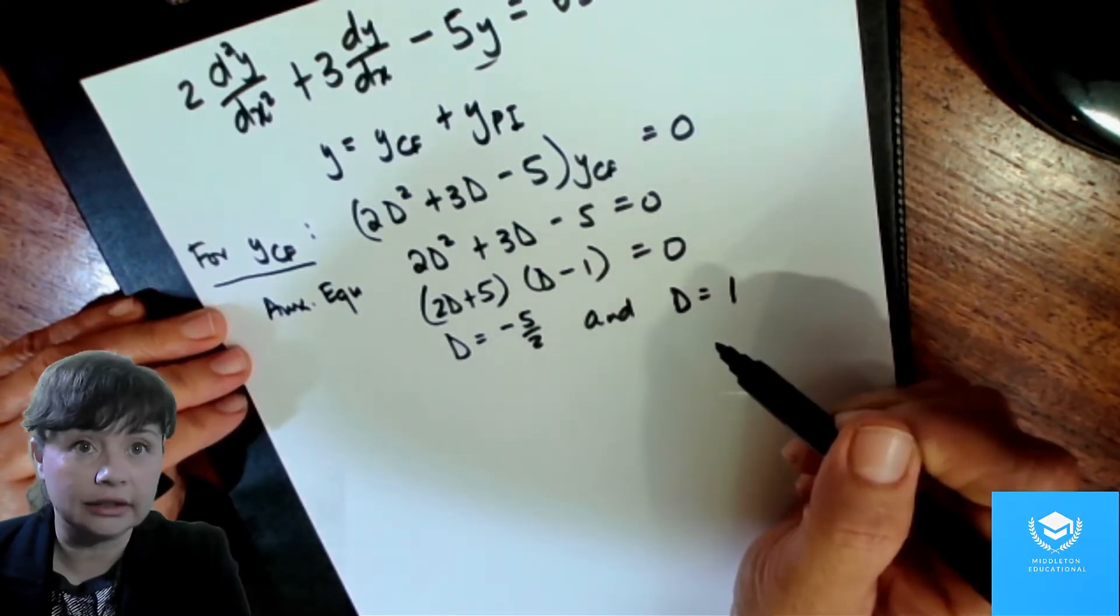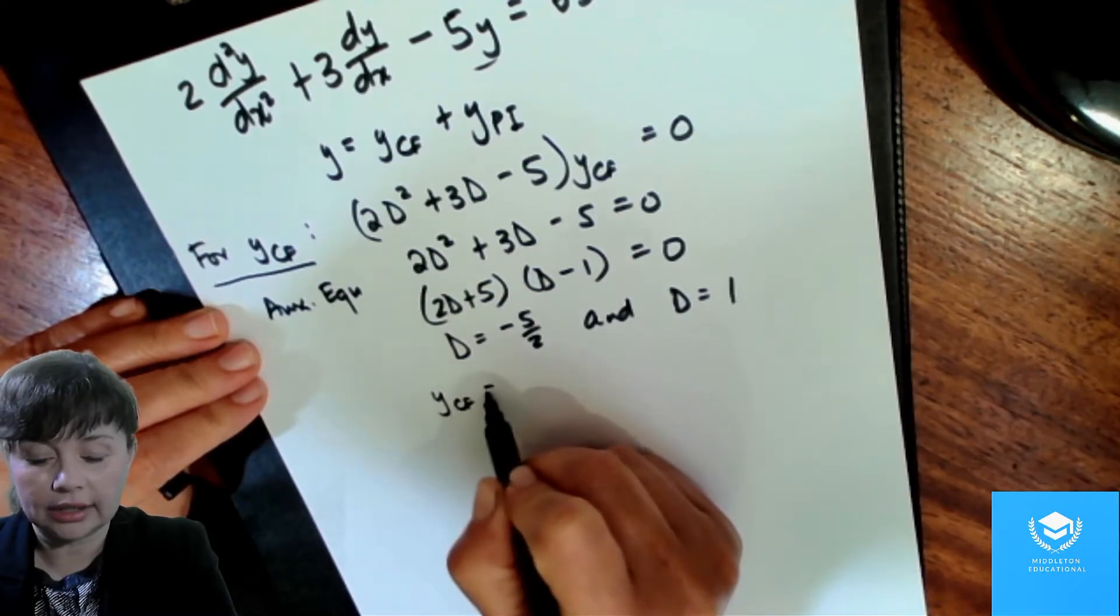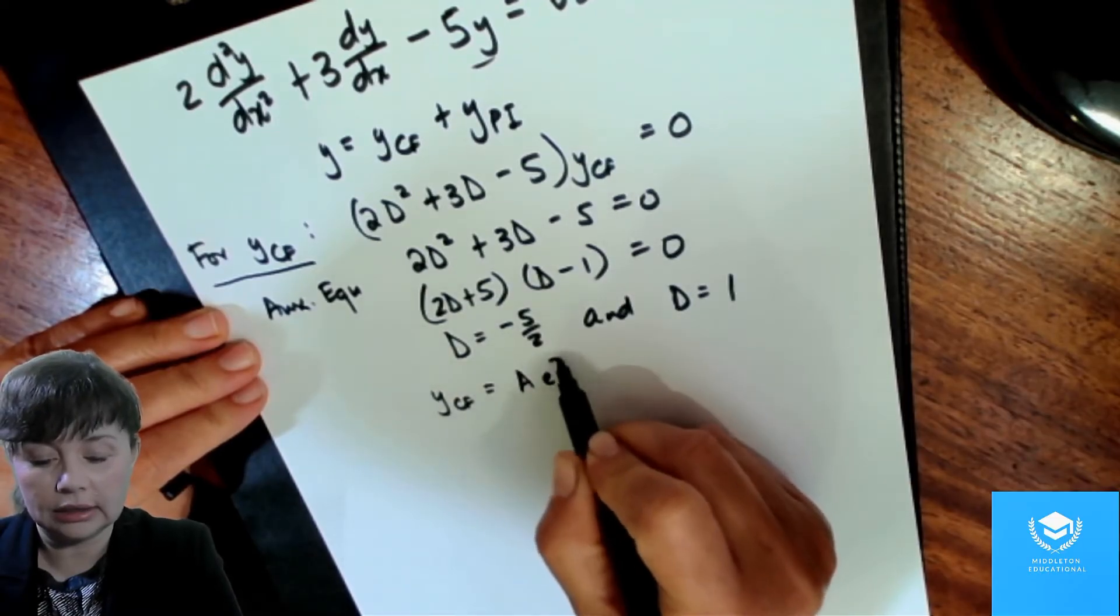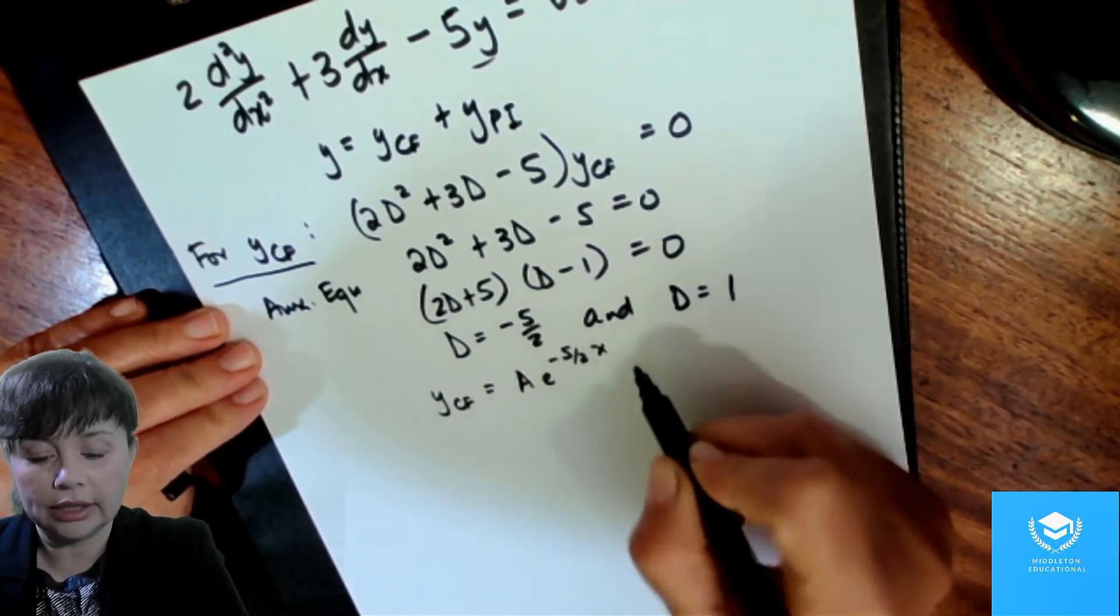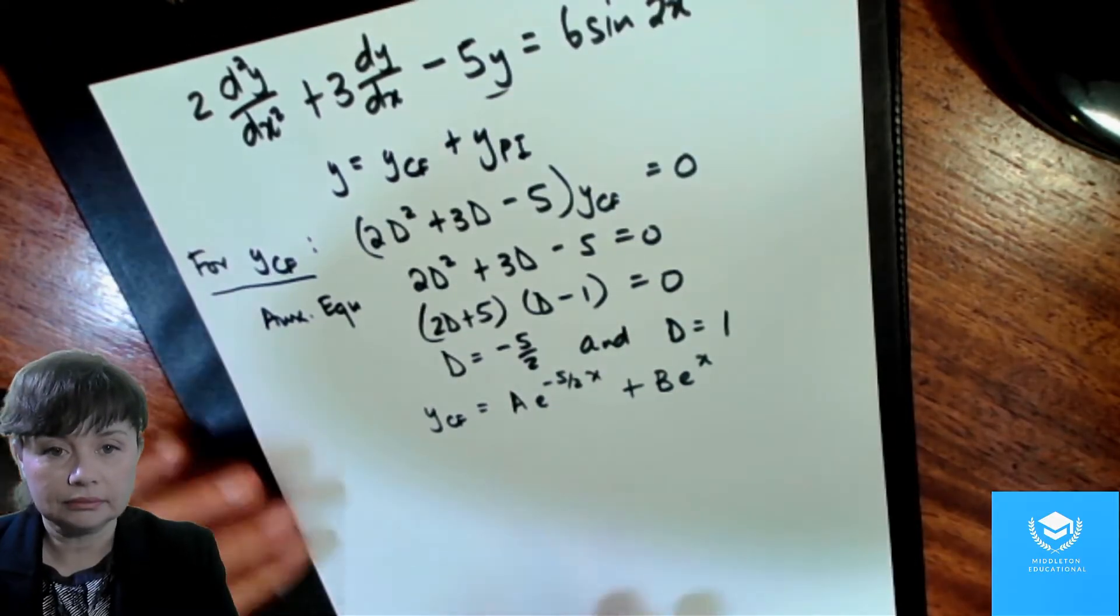which means d is minus 5 over 2 and d is going to be 1. So we've got roots here which are real and different. So that means that our complementary function has to have the form A e to the minus 5 over 2x plus B e to the x.